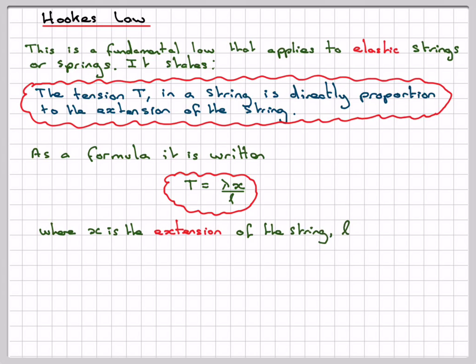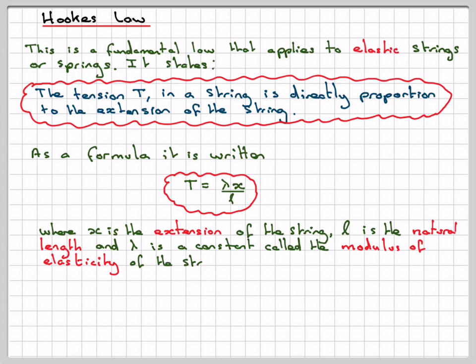Where x is the extension of the string, L is the natural length, and lambda is a constant called the modulus of elasticity, measured in Newtons.